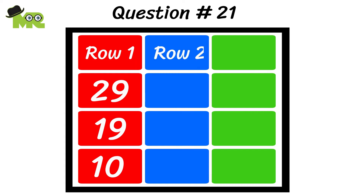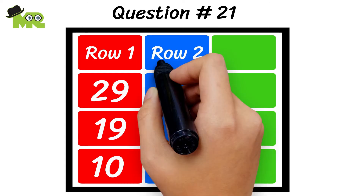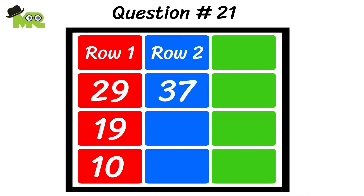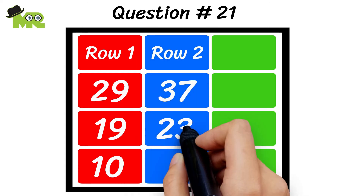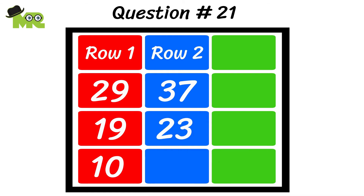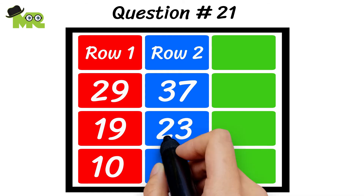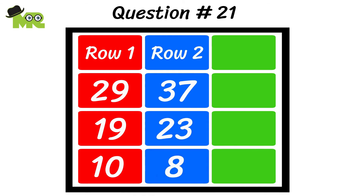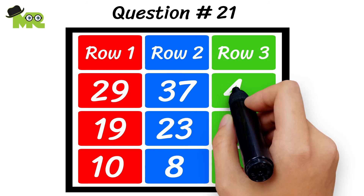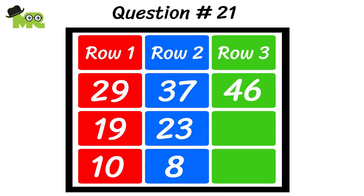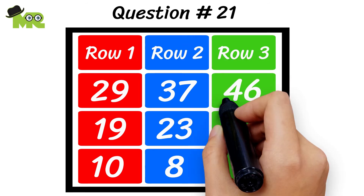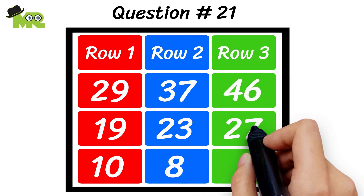In row two, the first box has the number 37, the second box has the number 23, and the third box has the number 8. In row three, the first box has the number 46 and the second box has the number 27.